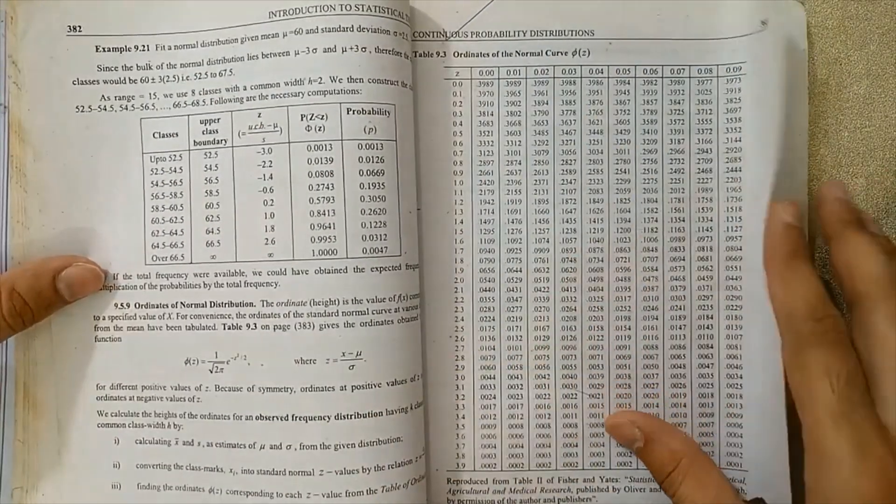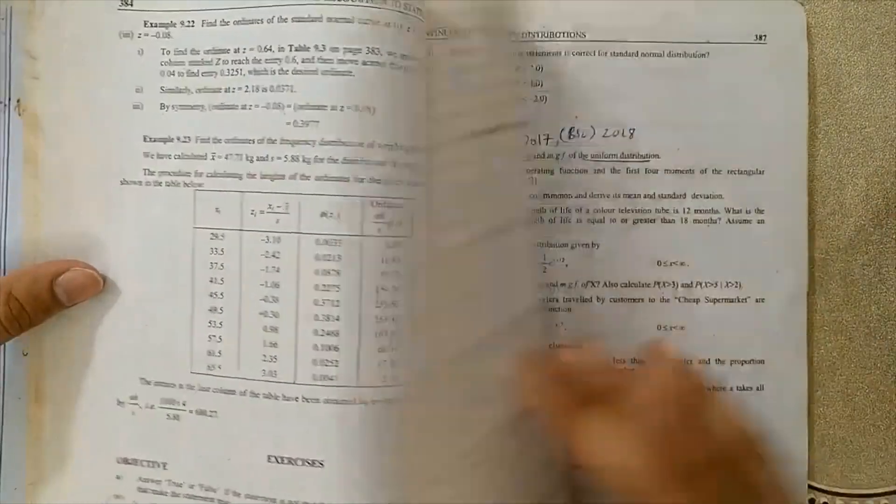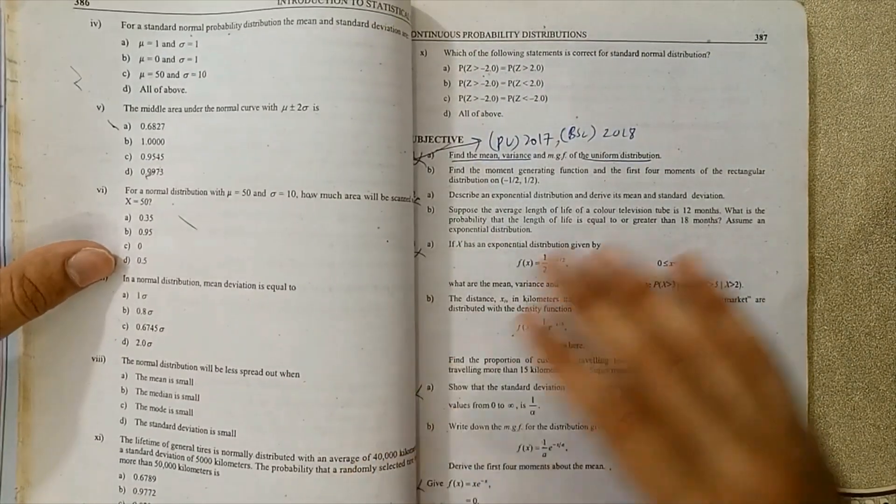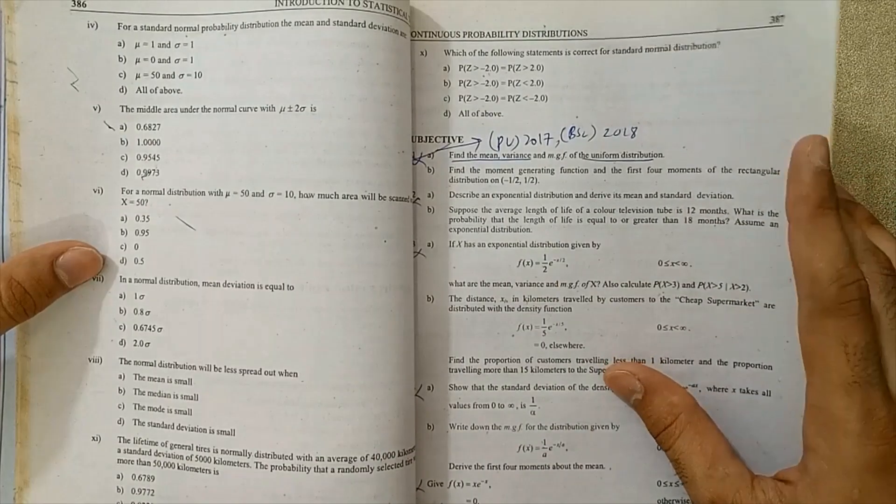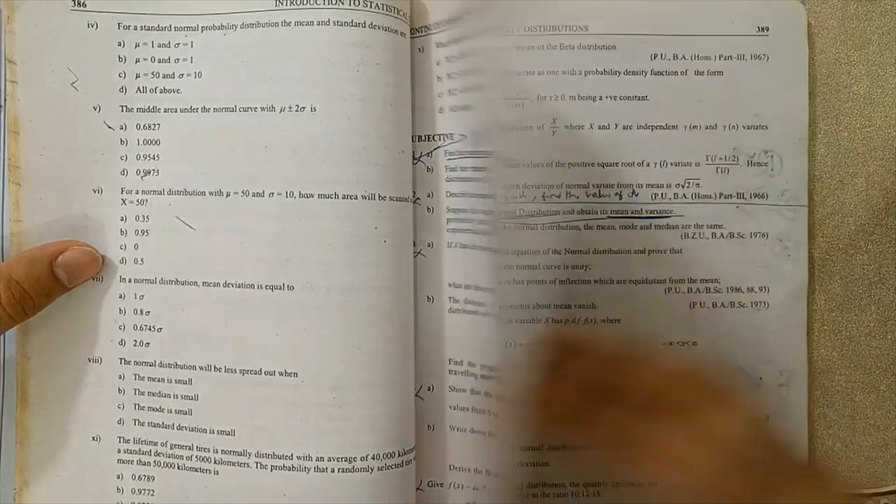Ordinates of normal curve tables. Now I'm going to move to the exercise on page number 387. Find the mean, variance, and moment function of uniform distribution. This is very important for you.